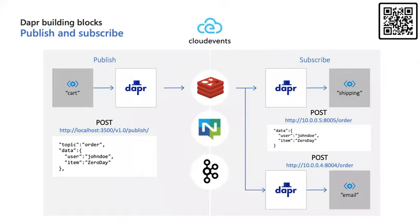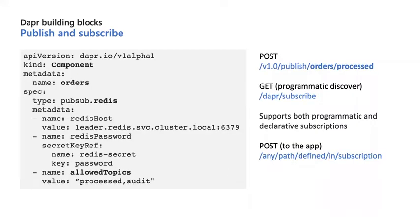Pub/sub really allows microservices to communicate with each other — the publisher has no knowledge of what the consumer is and consumers have no idea who published the data. Dapr uses CNCF CloudEvents as an envelope for those messages and provides at-least-once delivery guarantees. Common implementations for pub/sub inside Dapr include Redis, NATS, Kafka, RabbitMQ, and Hazelcast. For cloud providers: Azure Service Bus or Event Hubs, GCP Pub/Sub, and AWS SQS. Dapr provides the ability to scope these components so your applications can be limited to which topics and which applications can use each component.